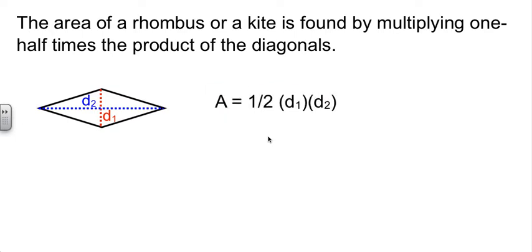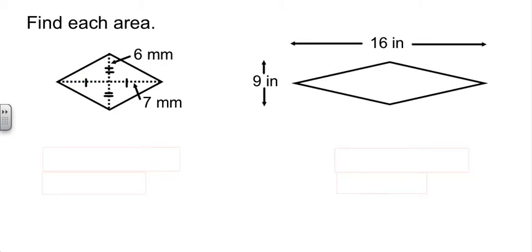Now, your note sheet, I know it doesn't print in color, but on the screen here, I do have it colored for you. D1 is the entire diagonal across here, and D2 is the entire diagonal going across this way. And the key is, it's the whole distance across that we're looking at. 1/2 times D1 times D2.